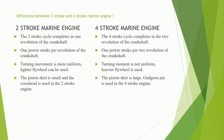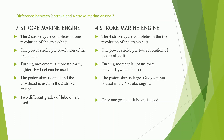The 5th difference: 2 different grades of lube oil are used in a 2 stroke marine engine — one for cylinder lubrication and another for crankshaft lubrication. Whereas in 4 stroke engines, only 1 grade of lube oil is used; splash lubrication is used so only 1 grade of oil serves both the cylinder and crankshaft lubrication.